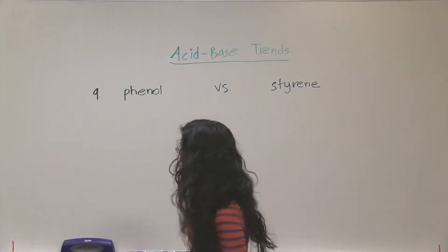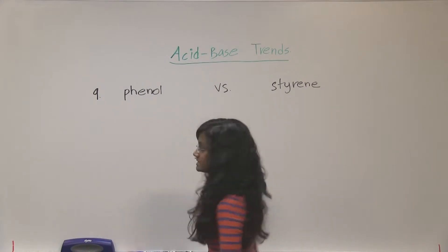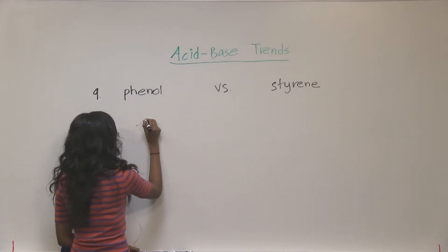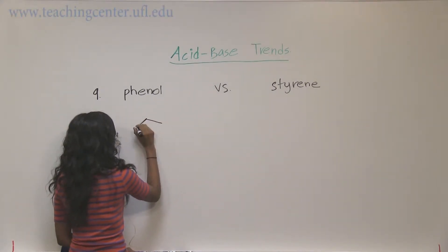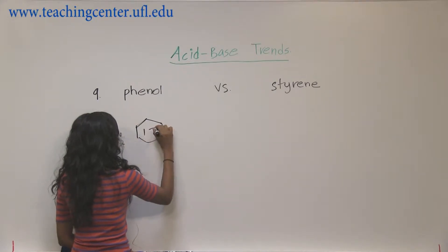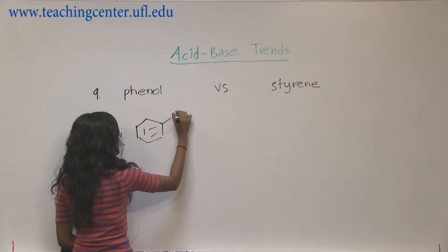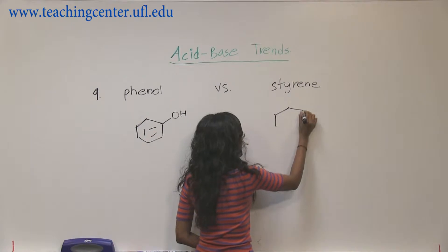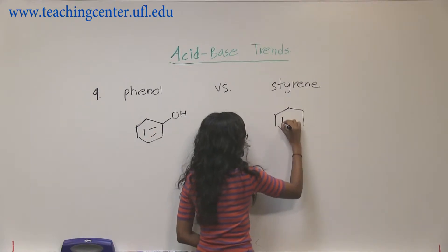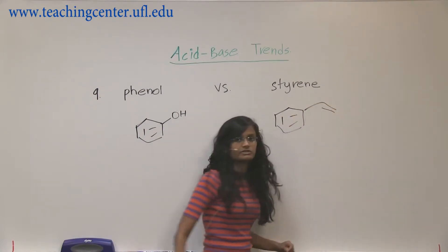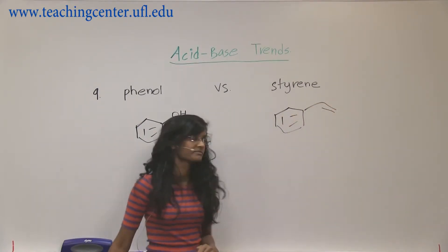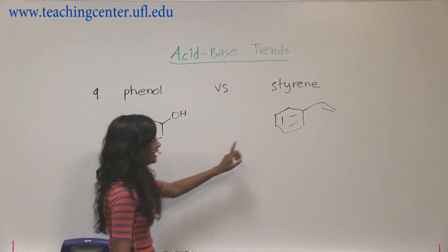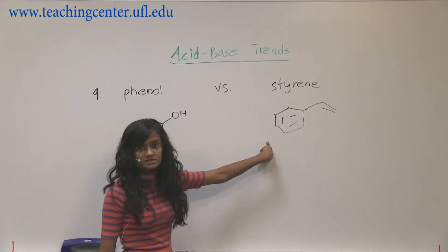The next comparison is phenol versus styrene. They both have star structures. Phenol has a hydroxyl group, and styrene has a vinyl group on benzene. Now we know that an alkene acts as a nucleophile.